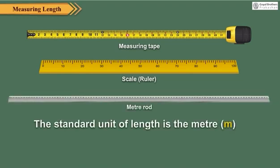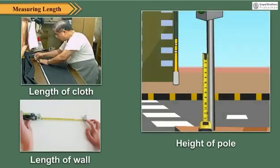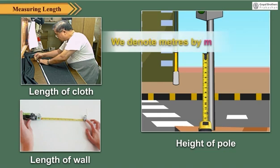The standard unit of length is the meter, that is m. Length of cloth, length of wall, height of pole, etc. are measured in meters. We denote meters by m.